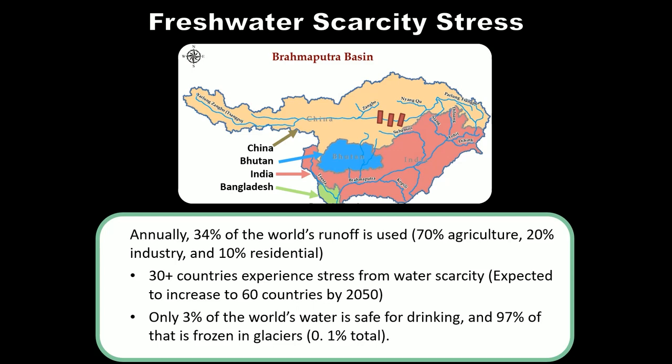From Unit 3, you know that the human population is growing, and the more people we have, the more water we require — not just for drinking, but for crops and all the other functions of industry and society. As countries move through the Human Development Index and the demographic transition, the average per capita water consumption also increases. But the fresh water supply has not increased — in fact, it has decreased because of habitat destruction and climate change.